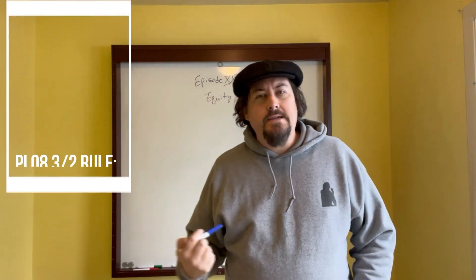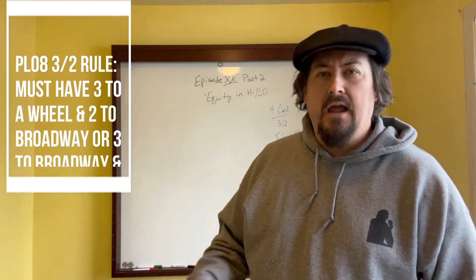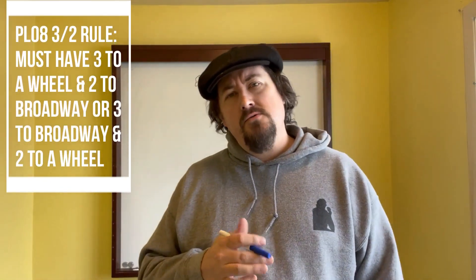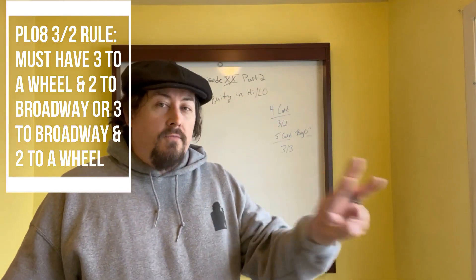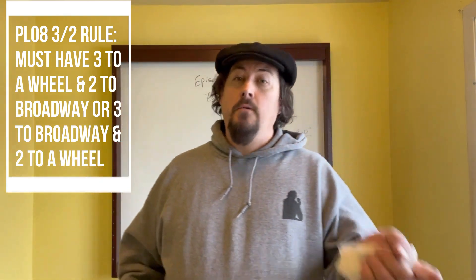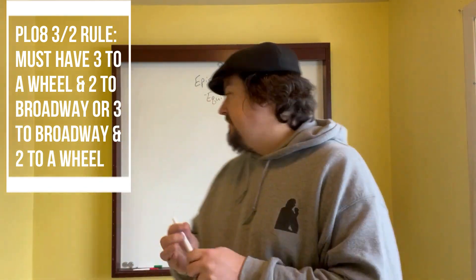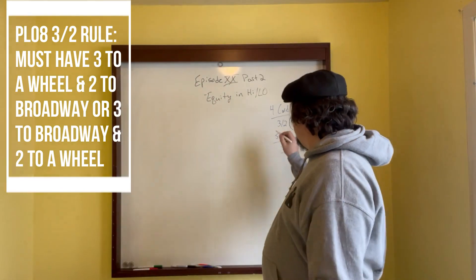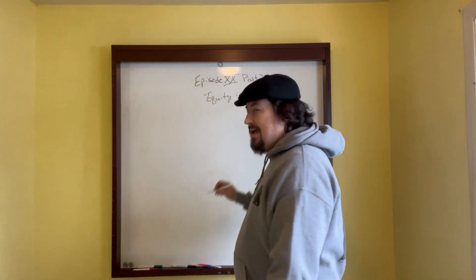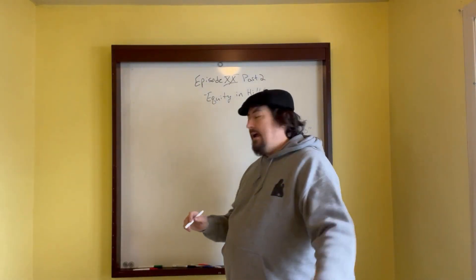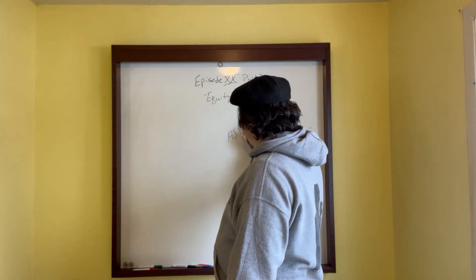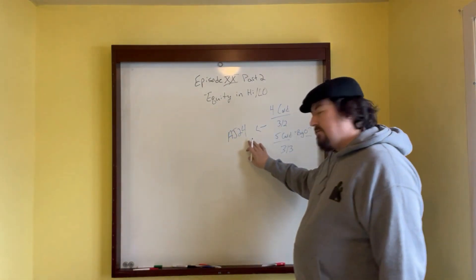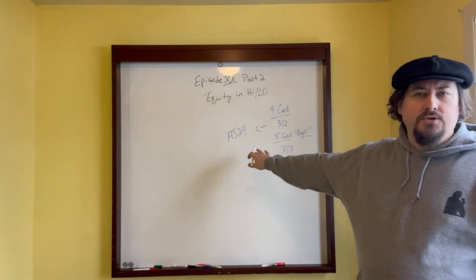When you're playing four-card high-low, we like to apply the three-two rule. The three-two rule is three to Broadway and two to a wheel, or three to a wheel and two to Broadway — and you have to have an ace in your hand. For example, when you're playing four-card, a hand like ace-jack-deuce-four gives you three to a wheel and two to Broadway.